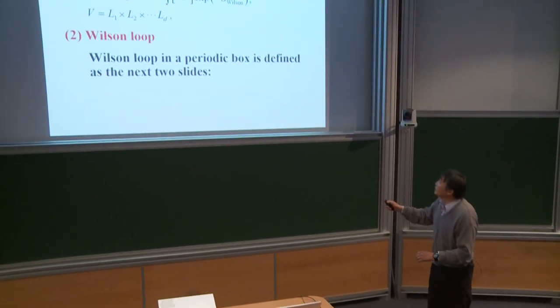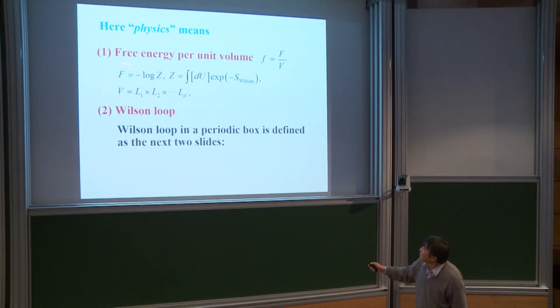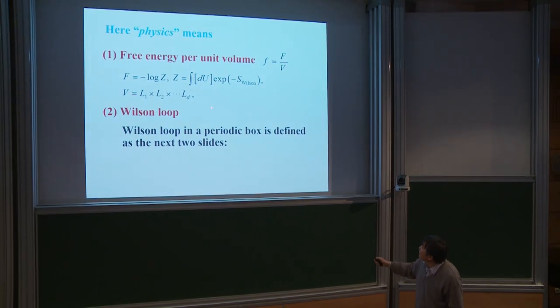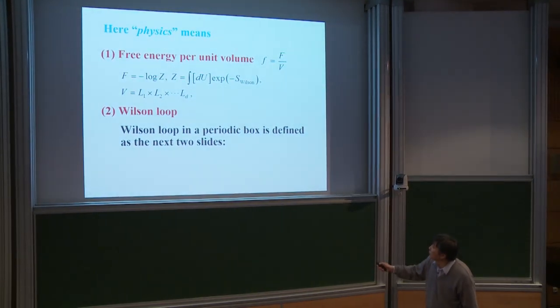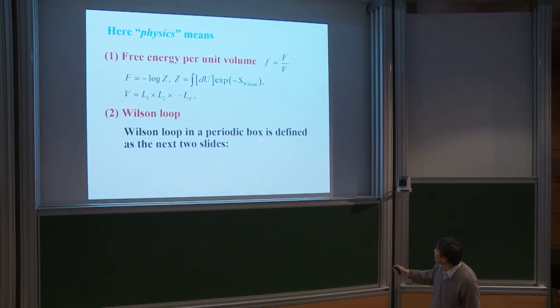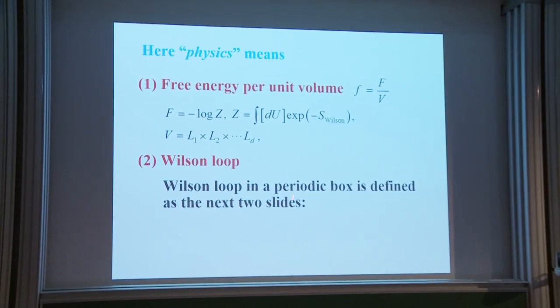Here, 'physics' means first of all the free energy per unit volume, and secondly the Wilson loop. The Wilson loop in a periodic box is defined as described in the next two slides.